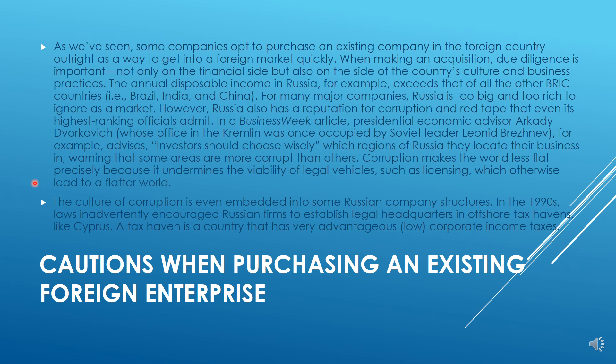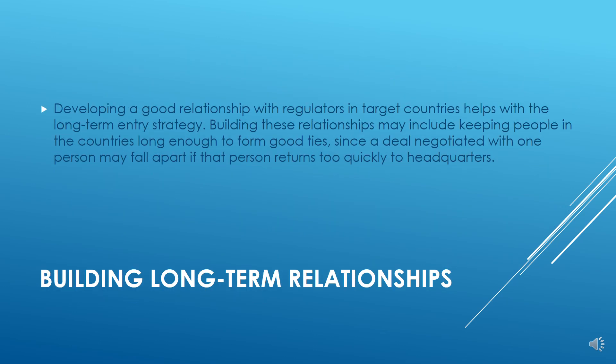The culture of corruption can even be embedded in some Russian company structures. In the 1990s, laws inadvertently encouraged Russian firms to establish legal headquarters in offshore tax havens like Cyprus — countries with very advantageous corporate income tax rates. Corruption is also very high in India. Developing good relationships with regulators in target countries helps with long-term entry strategy. Building these relationships may include keeping people in the countries long enough to form good ties, since a deal negotiated with one person may fall apart if that person returns too quickly to headquarters.